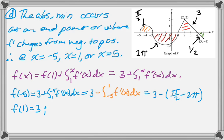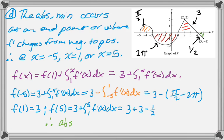f of 1 is just 3, which was given, and then I need f of 5. It's 3 plus the integral from 1 to 5 of f prime of x. You can see this is going to be bigger than 3. So it's 3 plus 3, and then minus 1 half, so that's greater than 3. So the absolute minimum value you ever get is 3. And that's the whole problem.